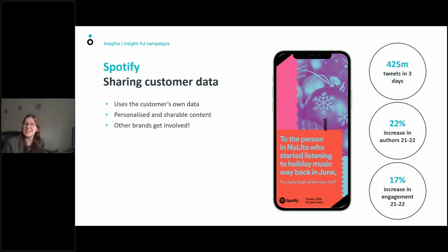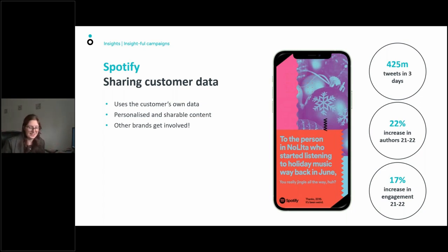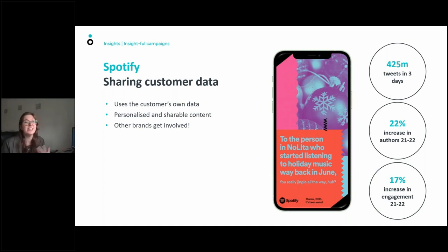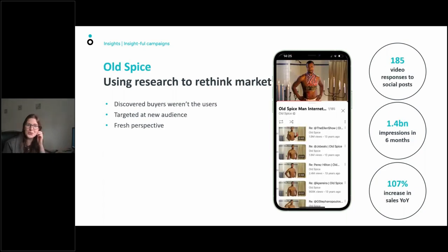Monzo does something similar using public data — they call it the Big Data thing of the year. They recently found that London is the only place in the UK where people go to Pret a Manger more than they go to Greggs. It's not often that you can use people's data in a way that they are happy with and willing to share, but these companies have done it.